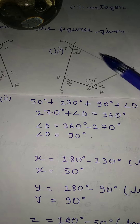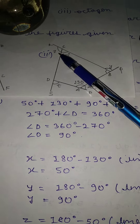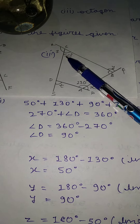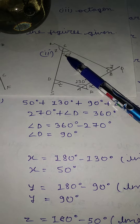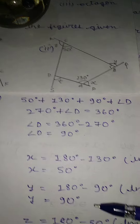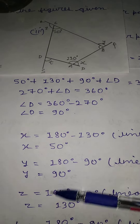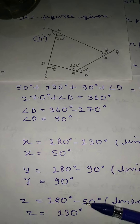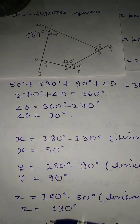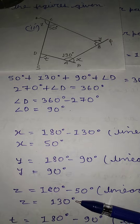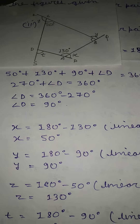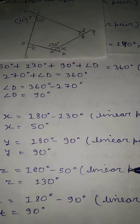Next, z is equal to 180 minus 50 degrees, so z is equal to 130 degrees, because it is also a linear pair.